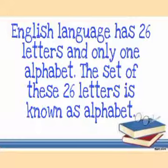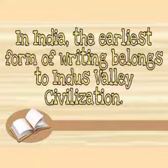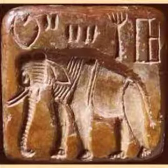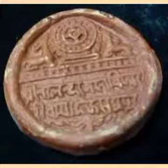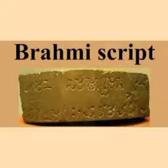The set of these 26 letters is known as the alphabet. In India, the earliest form of writing belongs to Indus Valley civilization. This type of writing was discovered on seals made of clay, terracotta, copper, etc. One of these scripts was Brahmi script.